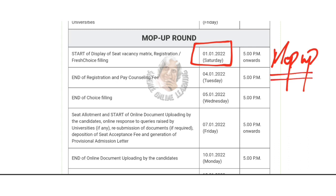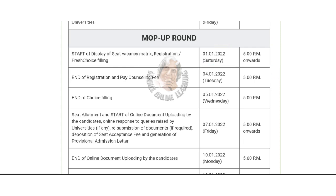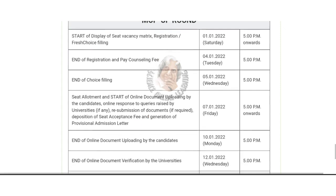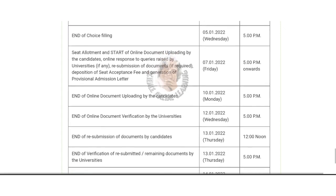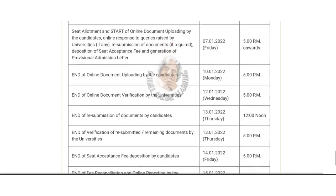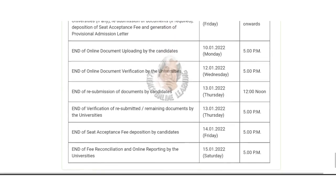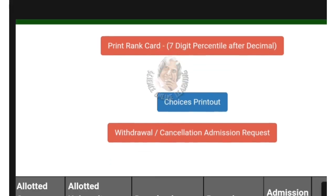That's why it's the last time. In the mop-up round, you have a fresh choice registration, so you have an upgrade. Now you have a registration seat vacancy matrix and fresh choice filling. In the mop-up round, you have a university seat, category seat, withdrawal, cancellation, and admission request.